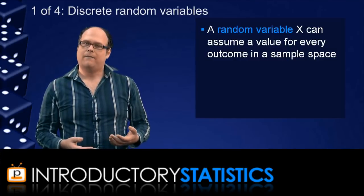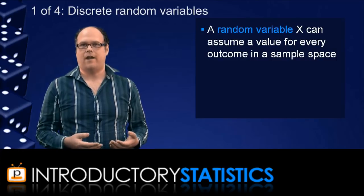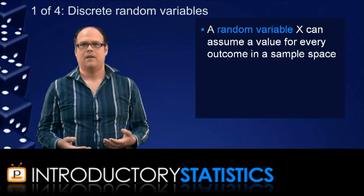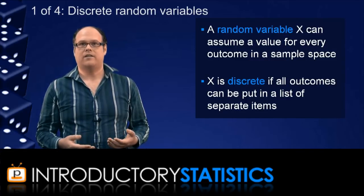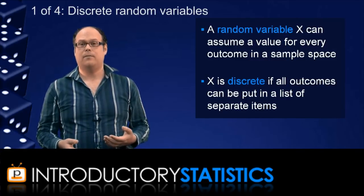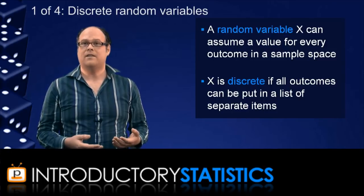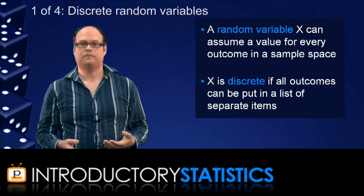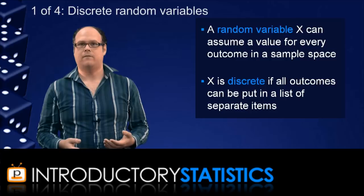To be more precise, a random variable x is a variable that can assume a numerical value for every outcome in a sample space. And a random variable is discrete if the sample space can be put into a list of separated items. For example, our coin flip experiment gives a discrete random variable because the sample space is just 0, 1, and 2. Later in this summary, we'll go over the other kind of random variable, continuous random variables.